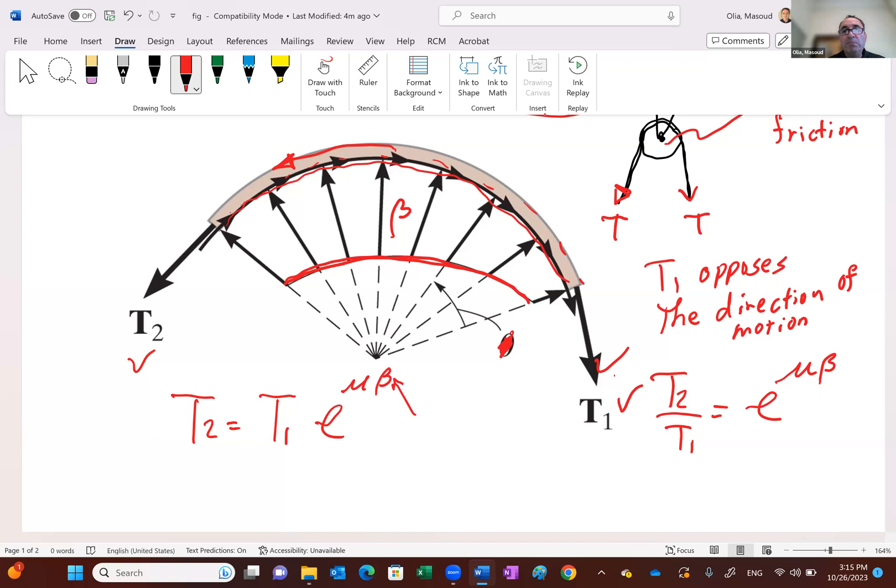Be careful, guys. Beta must be used in radians. So if you have 90 degrees of contact, that means pi over 2. If it's the entire 180, that's pi. So that's one thing to remember. So let's use this equation now to do a problem.